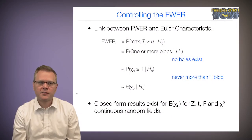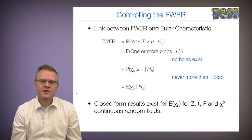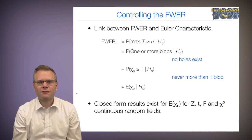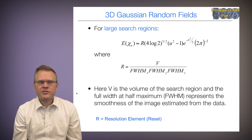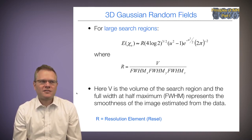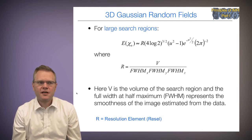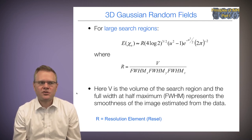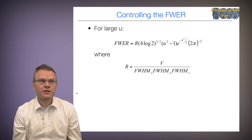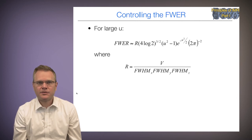The good news is that closed-form results exist for the expected Euler characteristic for z, t, f, and chi-squared continuous random fields. For three-dimensional Gaussian random fields, the expected Euler characteristic takes a formula where R = V over the full width at half maximum in each of the x, y, and z directions. V is the volume of the search region, and the full width at half maximum represents the smoothness of the image estimated from the data. Using this result, for large u the family-wise error rate is approximately equal to this expression, so we can choose a threshold u to control it.